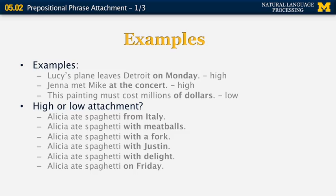Let's look at some examples of prepositional phrase attachment in real life. The first example: 'Lucy's plane leaves Detroit on Monday.' On Monday doesn't modify Detroit — it modifies 'leaves,' so that is high attachment. The second example: 'Jenna met Mike at the concert.' It is high attachment again because 'at the concert' modifies the verb 'meet,' not Mike. And the third example: 'This painting must cost millions of dollars.' In this case, 'of dollars' modifies 'millions' rather than 'cost,' so we have low attachment.